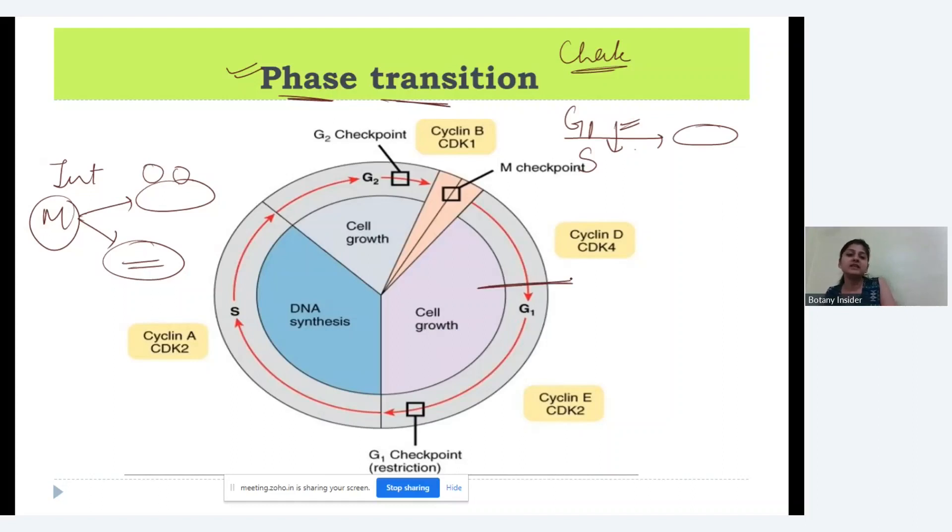So we have G1 to S phase transition or the checkpoint. Then we have the checkpoint over here in the synthesis phase. Then we have in the G2 to M and the mitosis we have in the metaphase to anaphase checkpoint.